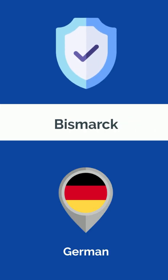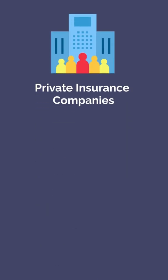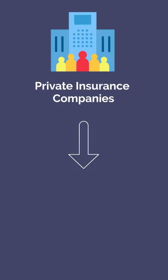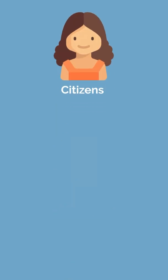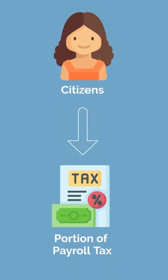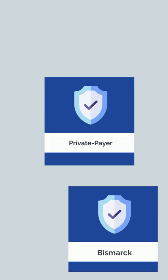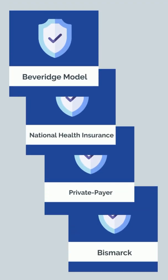Last is the Bismarck model, which the government healthcare system is derived from. Private insurance companies provide coverage, and citizens dedicate a portion of their payroll tax to remain insured. In this model, the delivery of care is mostly private. Most countries, including the US, are hybrids of these four models.